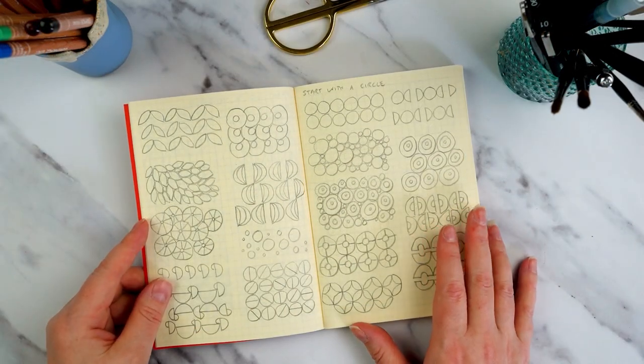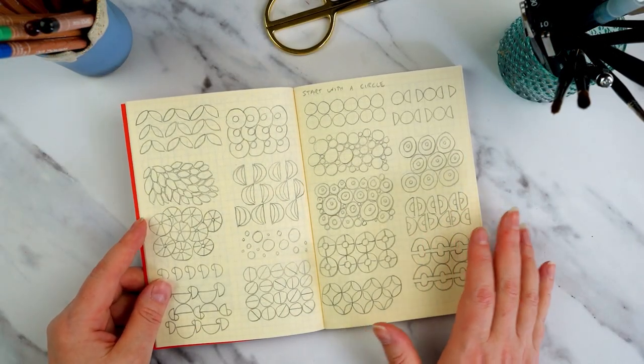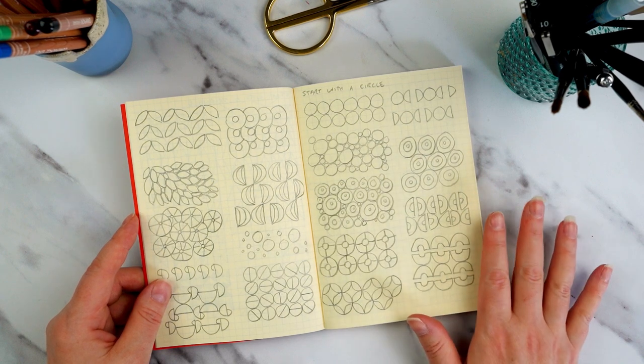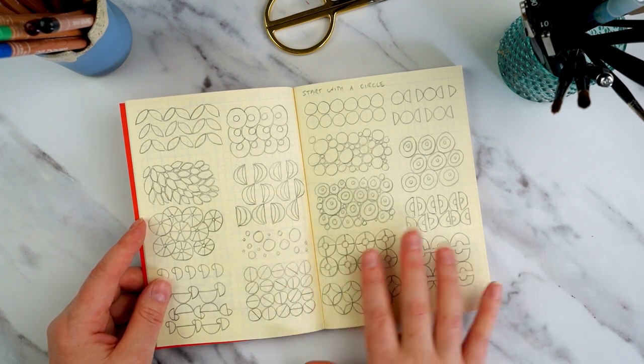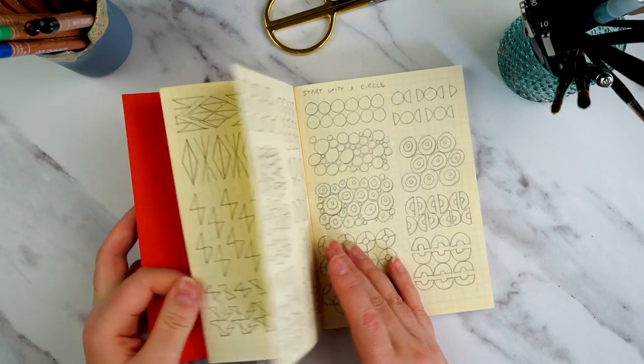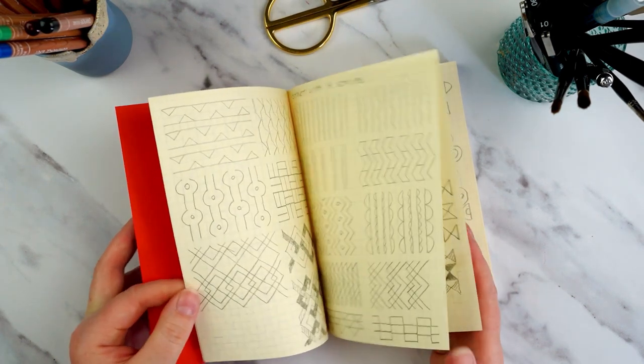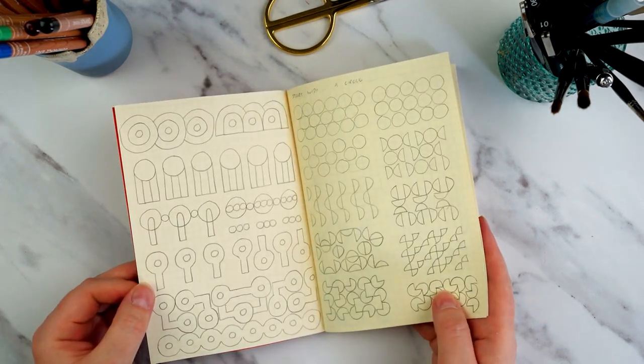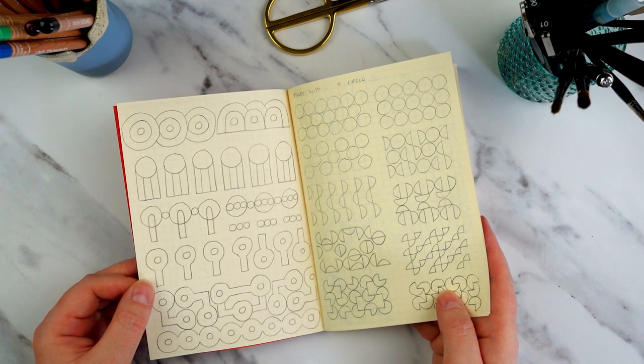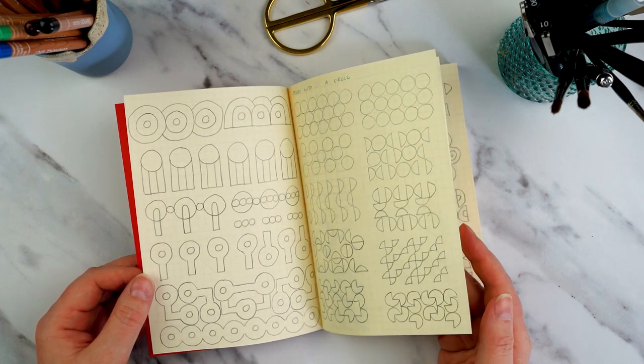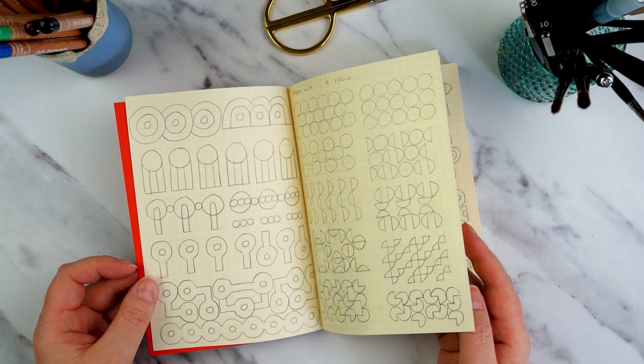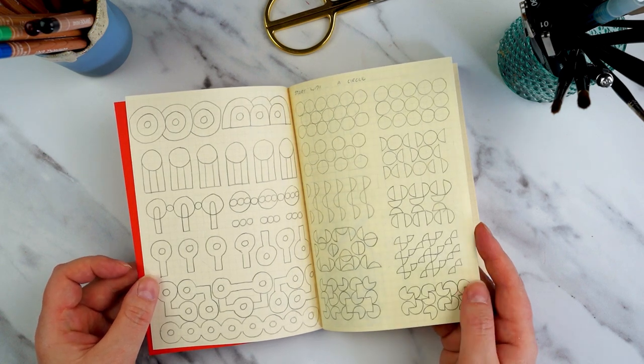So thanks very much for watching today. I really hope that you've enjoyed this video and that it's been useful. The video that I've got coming up on Friday, I'm going to be taking three of the patterns that I've worked out in this book that all start with that circle shape, and I'm going to be developing them in watercolor. So I really hope that you'll join me for that, and I'm looking forward to seeing you then. Bye bye.